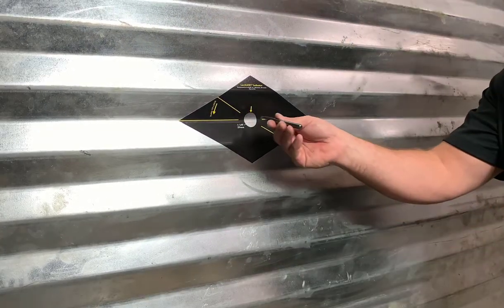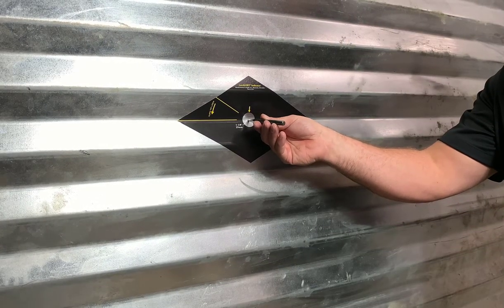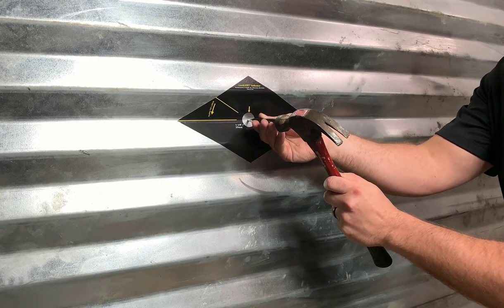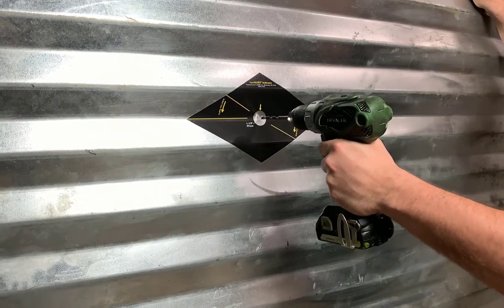Use a punch and hammer to mark the 1 1⁄8 inch center hole of the sticker to prevent your drill bit from walking. Drill the center 1⁄4 inch hole in the bin wall.